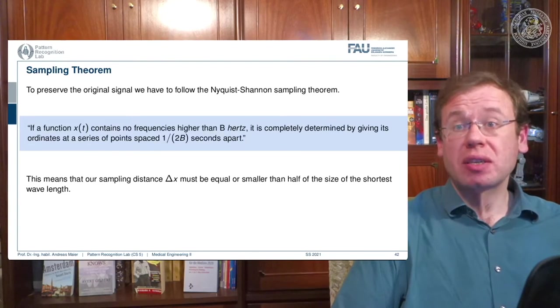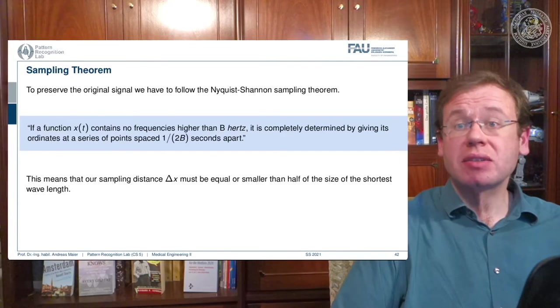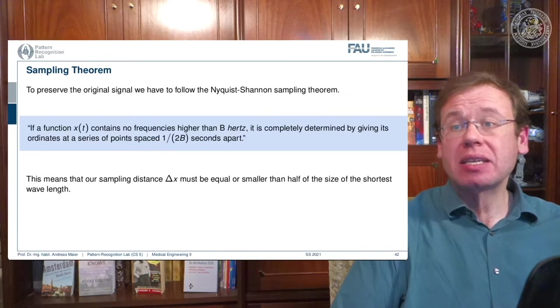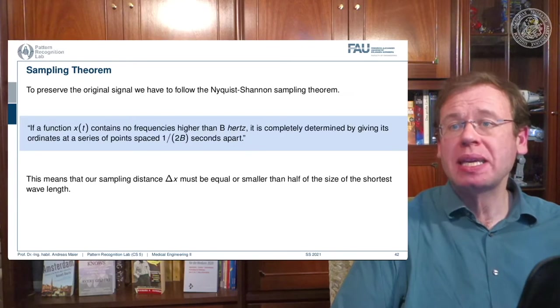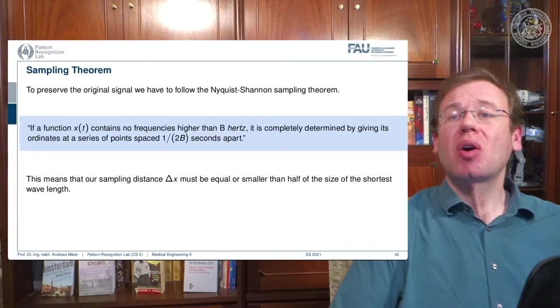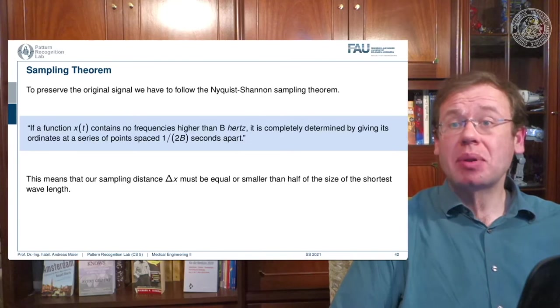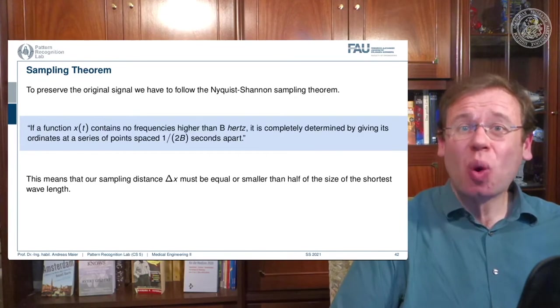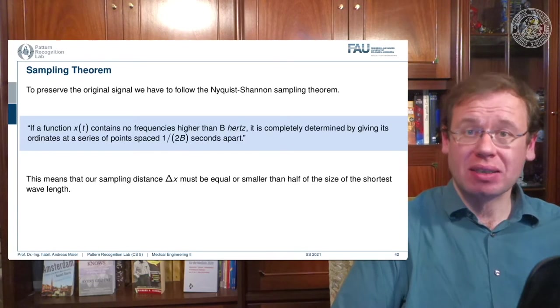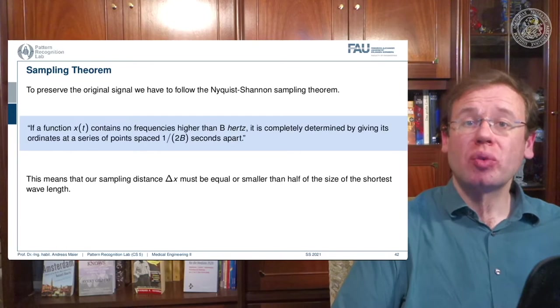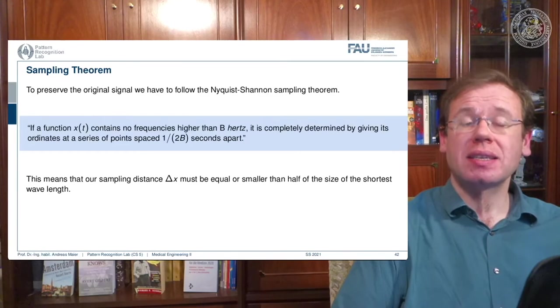if a function x of t contains no frequencies higher than b hertz, it is completely determined by giving its ordinates at a series of points spaced 1 over 2b seconds apart. So if we sample at a frequency that is twice as high as the highest frequency in the signal, we are able to restore the entire signal without any loss.